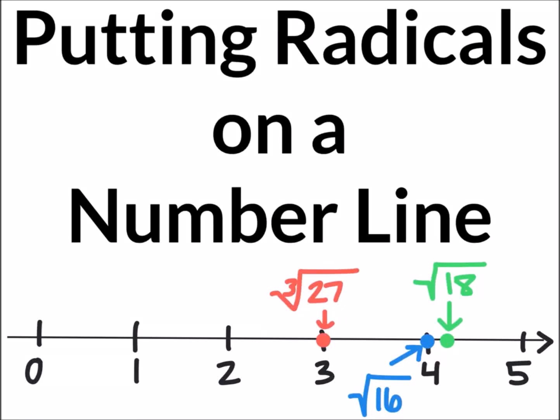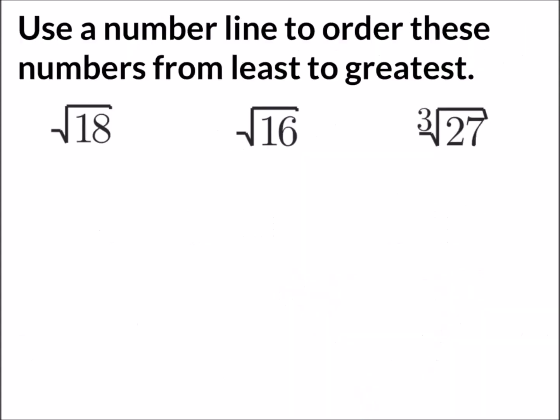This video will teach you how to put radicals onto a number line. The example says use a number line to order these numbers from least to greatest: the square root of 18, the square root of 16, and the cubed root of 27.